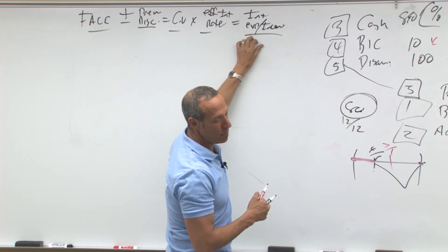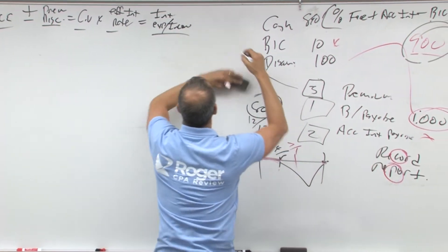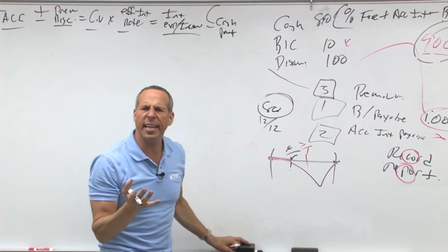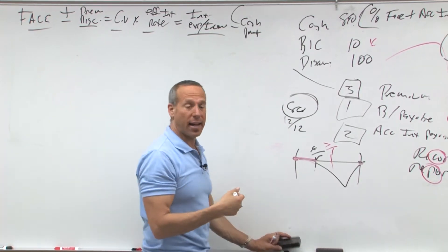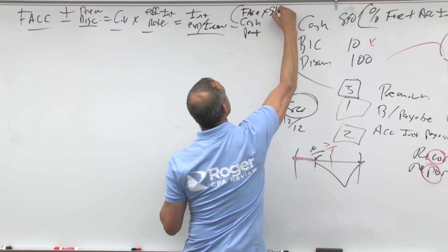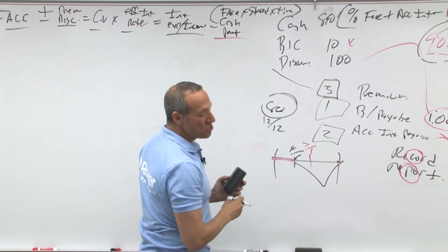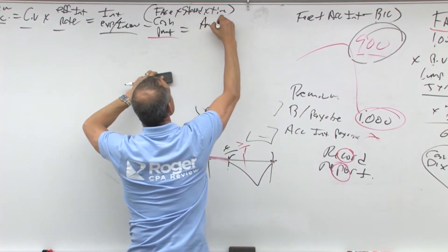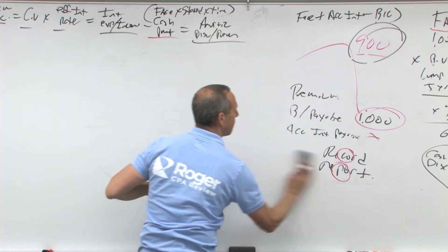So that's interest expense or interest income, minus the cash payment. The cash payment is important — it's your face, a million dollars, times the stated rate, times time. That is the cash payment. The difference between interest expense and cash equals the amortization of your discount or premium. That is our basic formula.